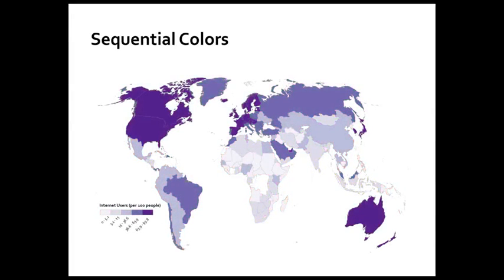Contrast that to the appropriate use of sequential colors. This is sequential data, so let's use sequential colors. This uses five different variations in hue, lightness, and saturation to show fewer internet users per 100 people at the low end and more at the high end. You can see right away where the low places are versus where the high places are. It's pretty simple.